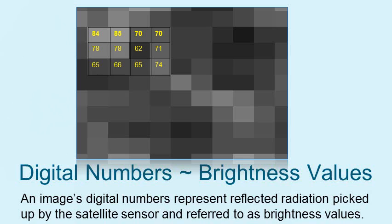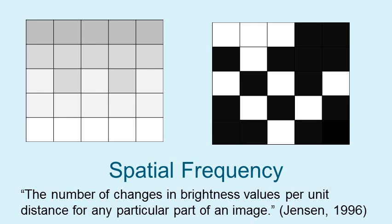As you can see, each pixel has its own value assigned to it. To understand spatial filters in remote sensing, you have to have an understanding of the concept of spatial frequency, where spatial frequency is the number of changes in brightness values per unit distance for any particular part of an image.